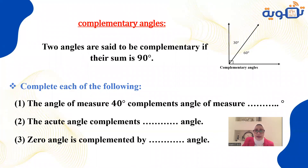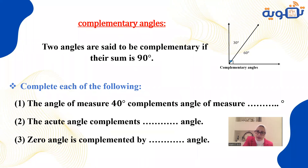Next, complementary angles are two angles whose sum equals 90 degrees. If I add two angles and they give me 90 degrees, those are called complementary angles.